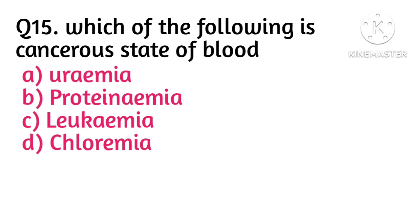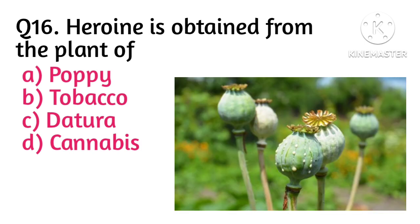Question number 15: which of the following is a cancerous state of blood? Option C is correct, that is leukemia. Uremia is a dangerous condition that occurs when the kidneys no longer filter properly, likely in the final stage of chronic kidney disease; it is a high level of urea in blood. Proteinemia is an increased level of protein in the urine, which can be a sign of kidney damage. Chloremia means excess of chloride in blood.